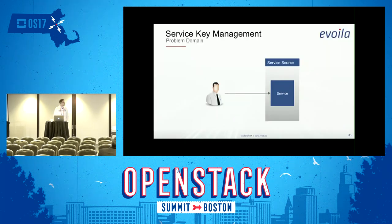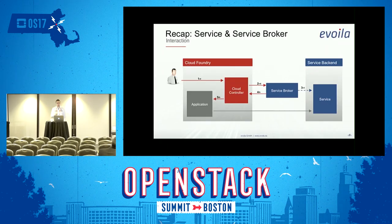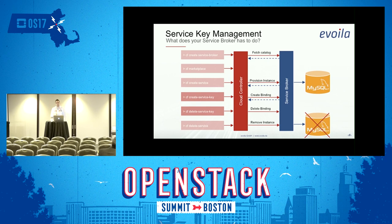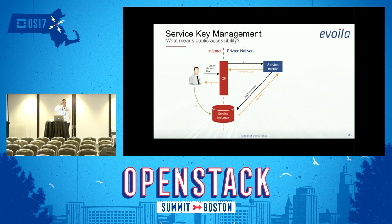Bob has this service and wants direct access, but with the old workflow that doesn't work. The change is that Bob creates a service key instead of a service binding — he can address a name to it. It's essentially the same object, the same credentials, but the use case is different because instead of the application being in the private network where the host and the Cloud Foundry environment are...